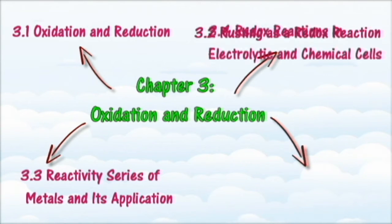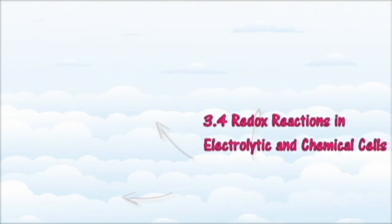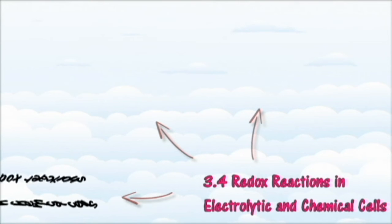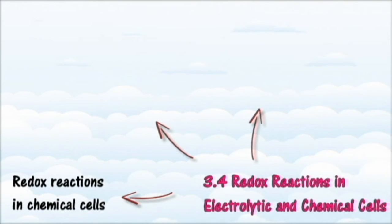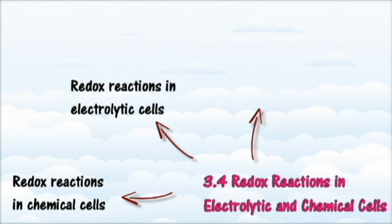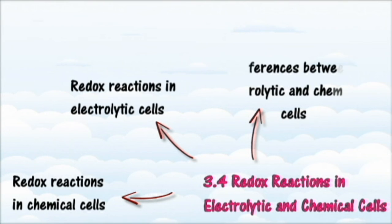In Section 3.4 we will learn about electrolytic and chemical cells. At the end of this section you should be able to explain with examples the oxidation and reduction reactions at the electrodes of various chemical cells, explain with examples the oxidation and reduction reactions at the electrodes of various electrolytic cells, state the differences between electrolytic and chemical cells in terms of basic structure, energy conversion, and the transfer of electrons at the electrodes, and compare and contrast electrolytic and chemical cells with reference to the oxidation and reduction processes.